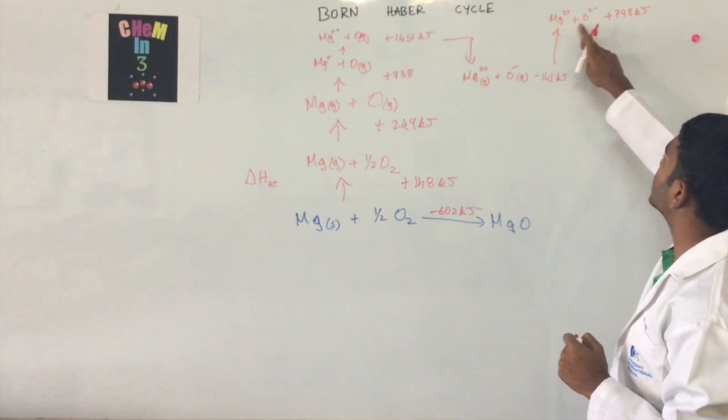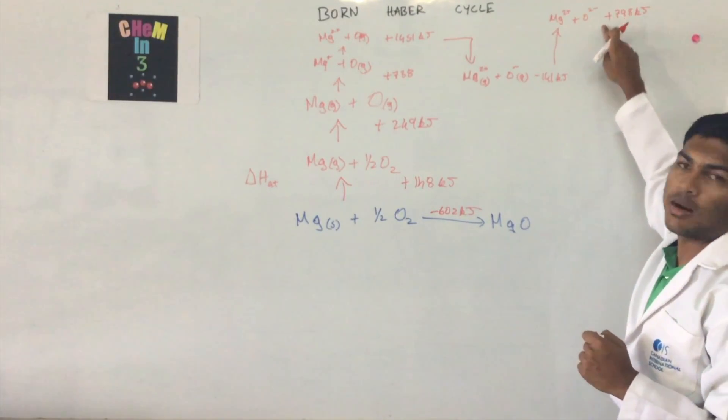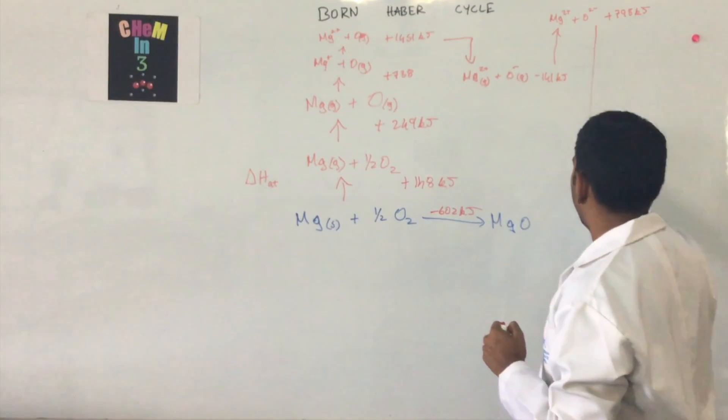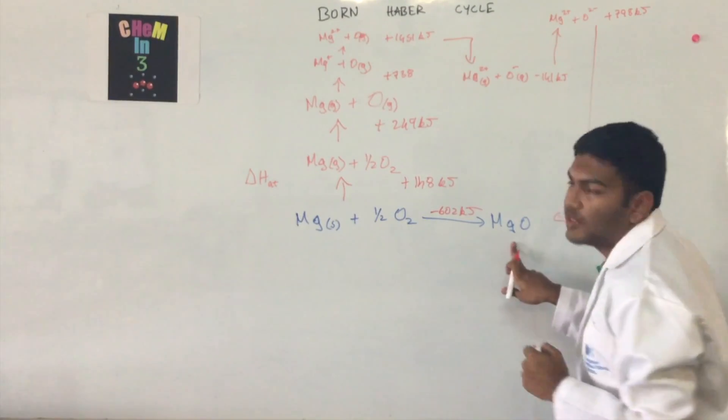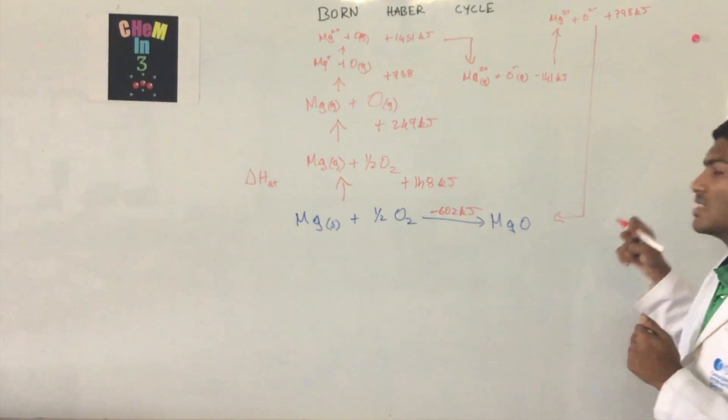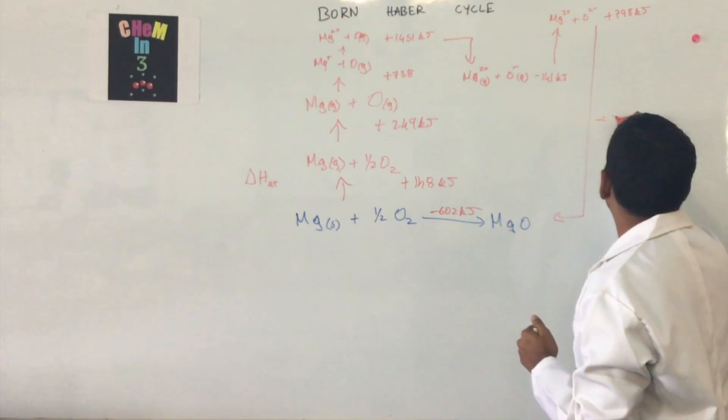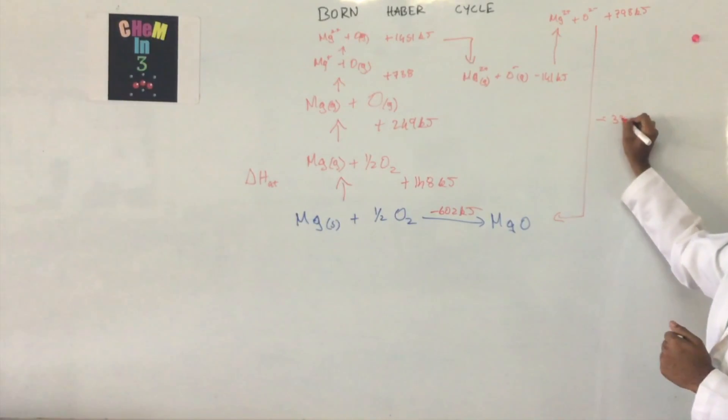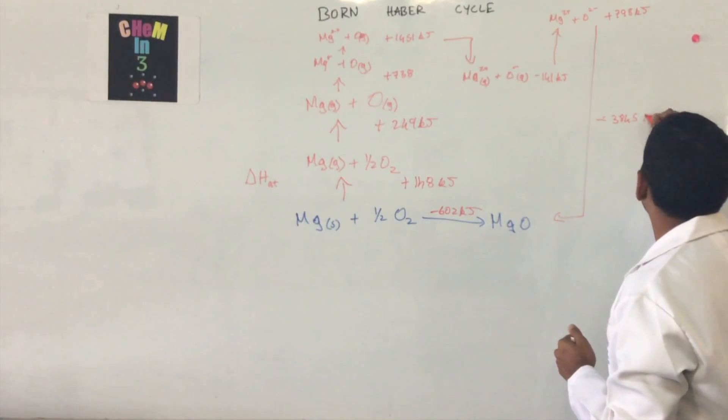So this is the cycle that we go to, where you have Mg2+ and O2-, which comes down all the way to where we are at MgO when they fuse together. And that is at negative 3845 kilojoules.